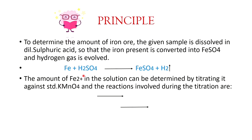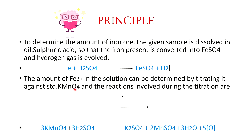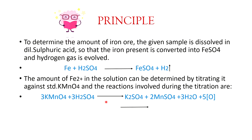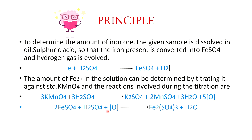The KMnO₄ used has a known normality - it has already been standardized. The reaction is: 3KMnO₄ + 3H₂SO₄ → K₂SO₄ + 2MnSO₄ + 3H₂O + 5O. KMnO₄ and H₂SO₄ react, and the product is ferric sulphate, Fe₂(SO₄)₃.